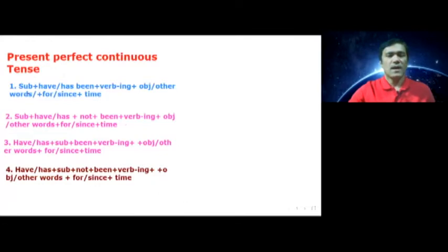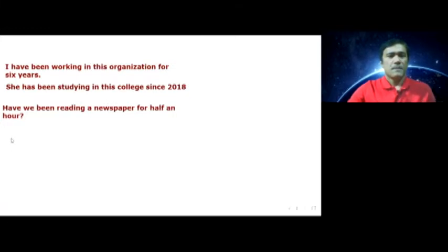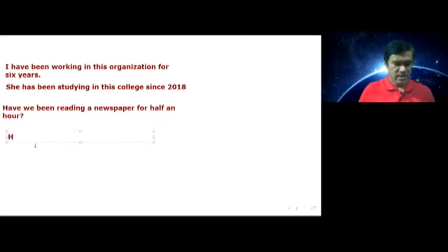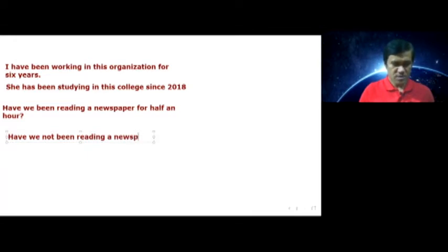The interrogative sentence is: Have we been reading a newspaper for half an hour? Let's look at the structure for the negative interrogative: have/has plus subject plus not plus been plus verb-ing plus object or other words plus for/since plus time. So, if I make the interrogative sentence negative, it becomes: Have we not been reading a newspaper for half an hour?